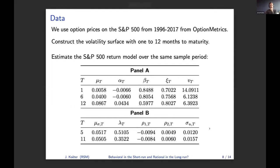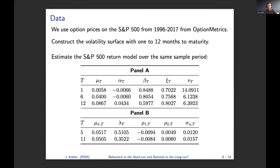Something on the data: we use option prices from the S&P 500 starting in 1996 up to 2017. In order to estimate the pricing kernel, we will make use of the volatility surface, which we will construct in the same way as OptionMetrics does. The volatility surface gives us an observation of the volatility on every day, which allows us to estimate the pricing kernel on each trading day that options are available.